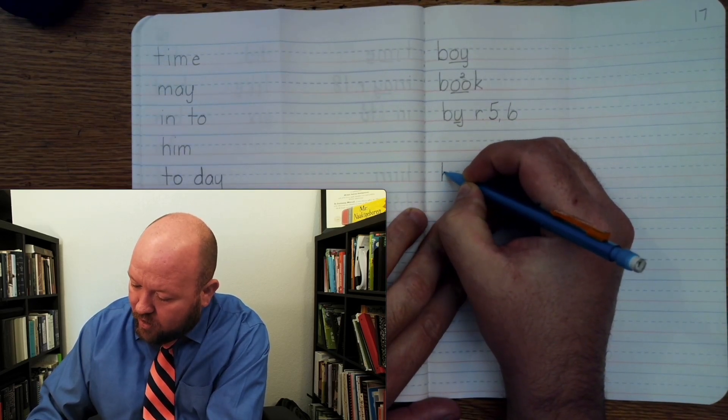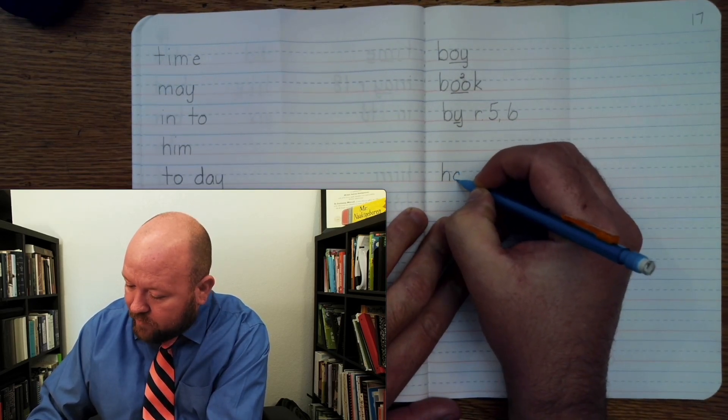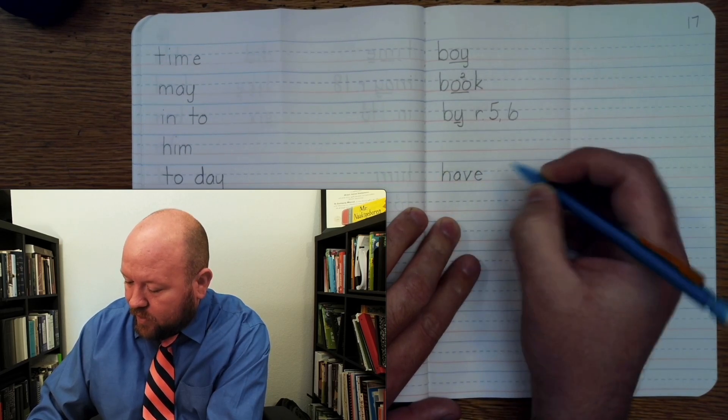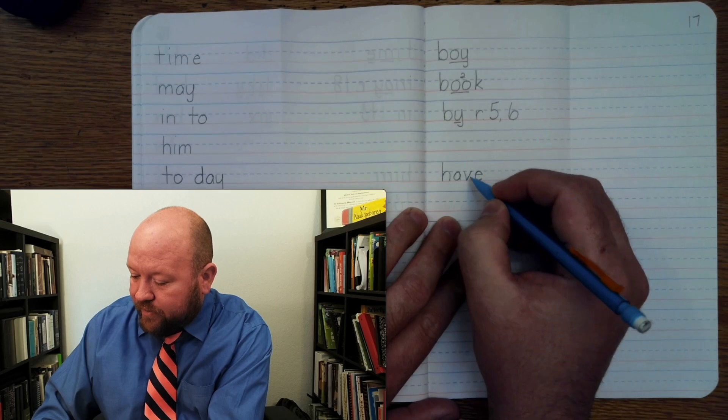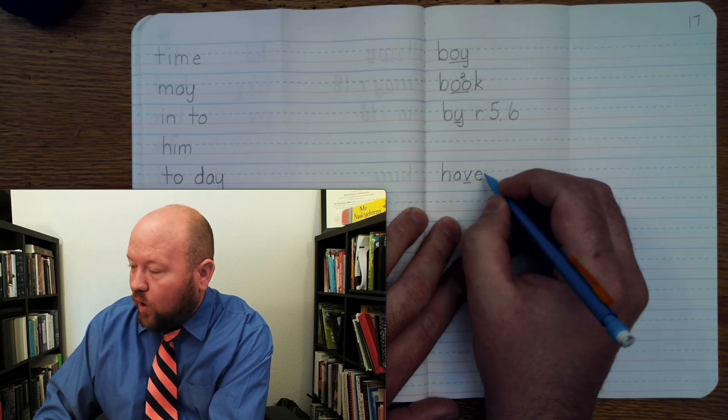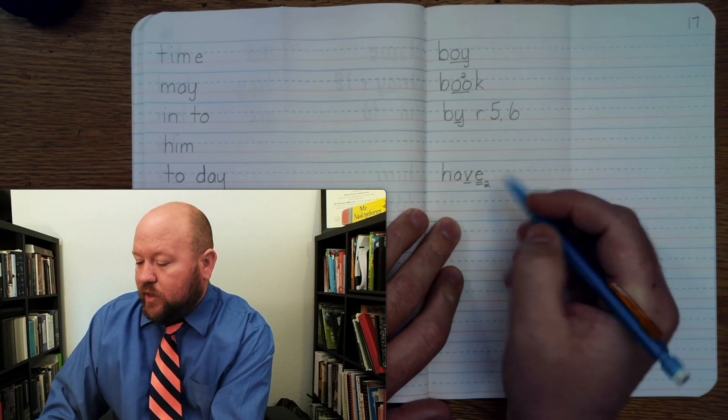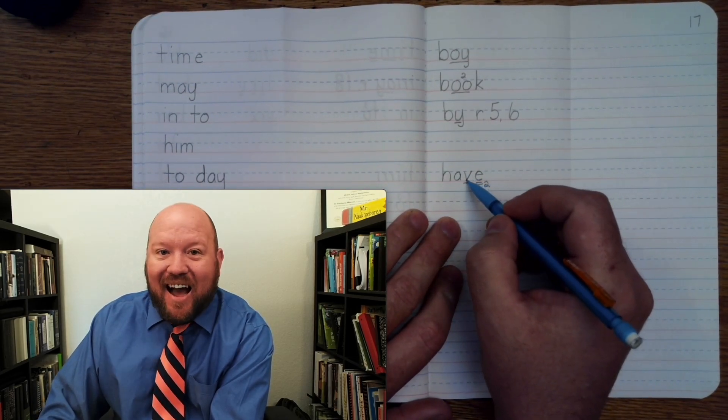Have. H-A-V-E. H-A-V, once, E twice, job two. So E is making sure that the word does not end in a V.